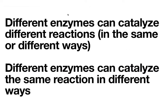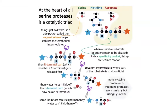Sometimes enzymes actually form covalent bonds — they link directly to the substrate as an intermediate. We call that covalent catalysis. Let's look at an example of a protease that uses covalent catalysis: the same overall reaction of cutting a peptide, but going a very different way.